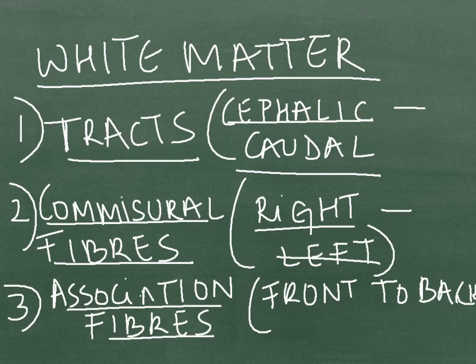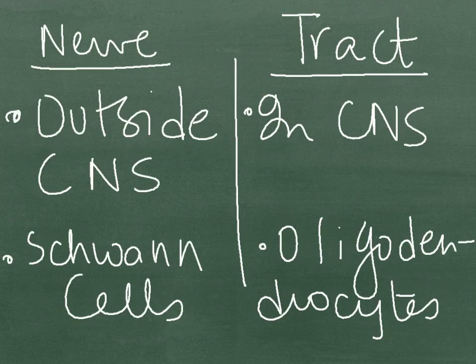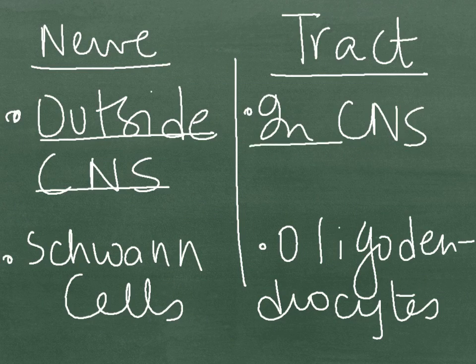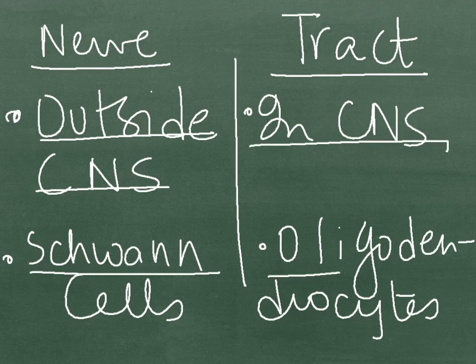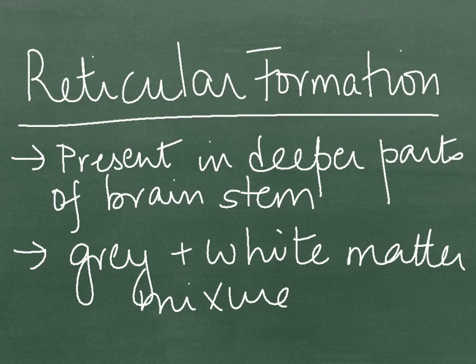The major differences between nerves and tracts are: number one, nerves are found outside the CNS whereas tracts are found in the CNS; and number two, nerves are made up of Schwann cells whereas tracts are made up of oligodendrocytes.